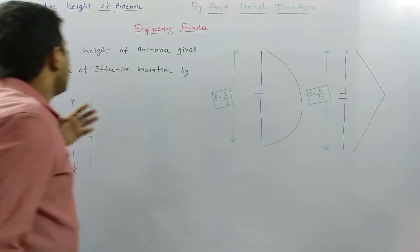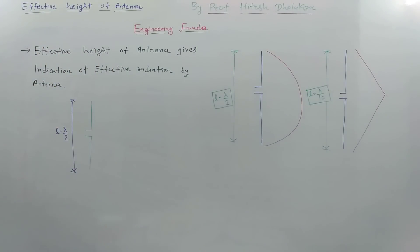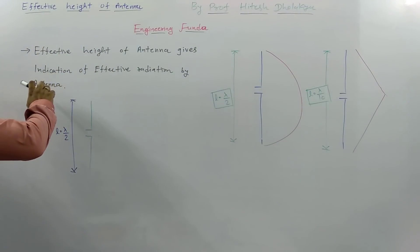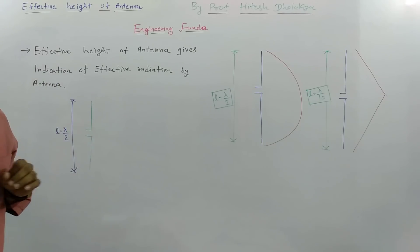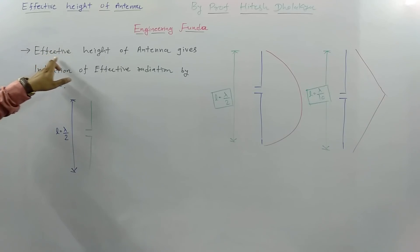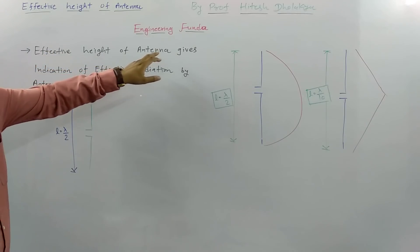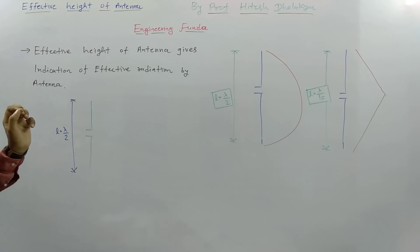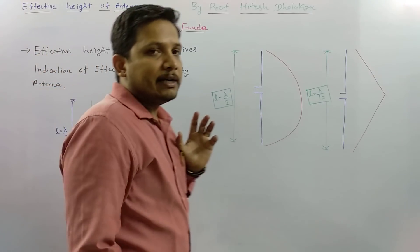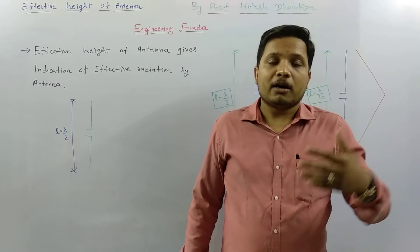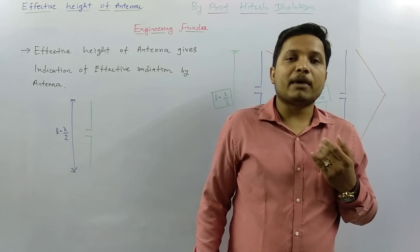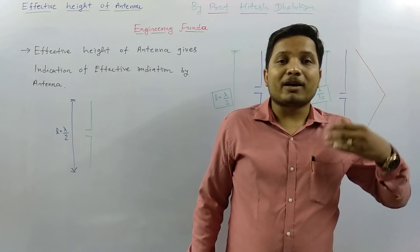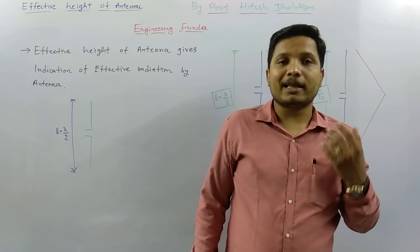When we talk about effective height of antenna, it gives a clear indication of how much effective radiation happens by the antenna. So effective height of antenna gives indication of effective radiation by antenna — what does that mean and how do we calculate it?